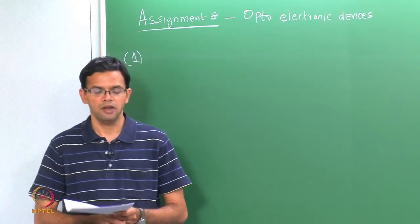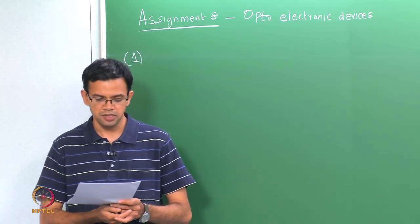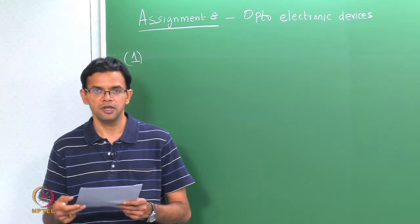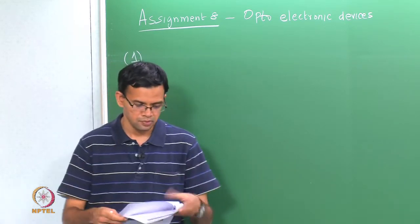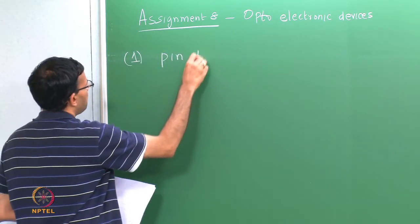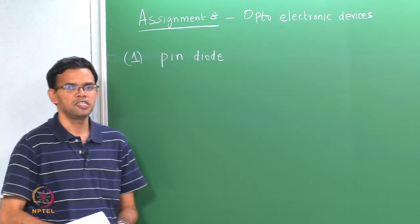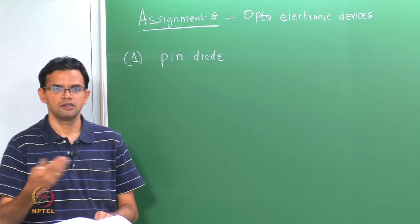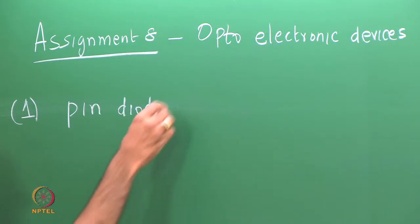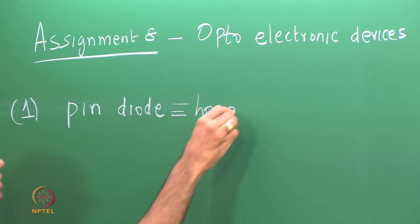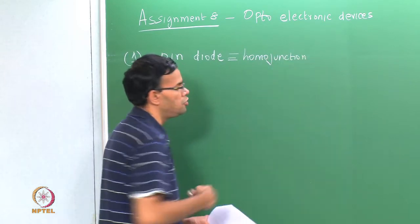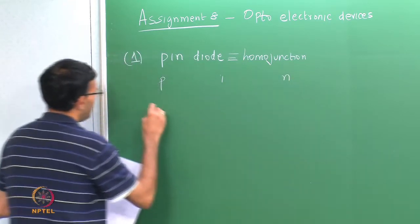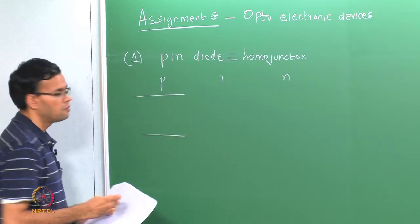In problem 1 we have a PIN diode - a P-type, intrinsic, and N-type. We are asked to draw a qualitative energy band diagram both in equilibrium, forward and reverse bias. We have a PIN diode with essentially two interfaces: one between the P-type and the intrinsic material, and the other between the intrinsic and the N-type. For simplicity we will just take this to be a homojunction, so all three materials are the same - the only difference is in the doping concentration and the type. We can draw the energy band diagram for all three.